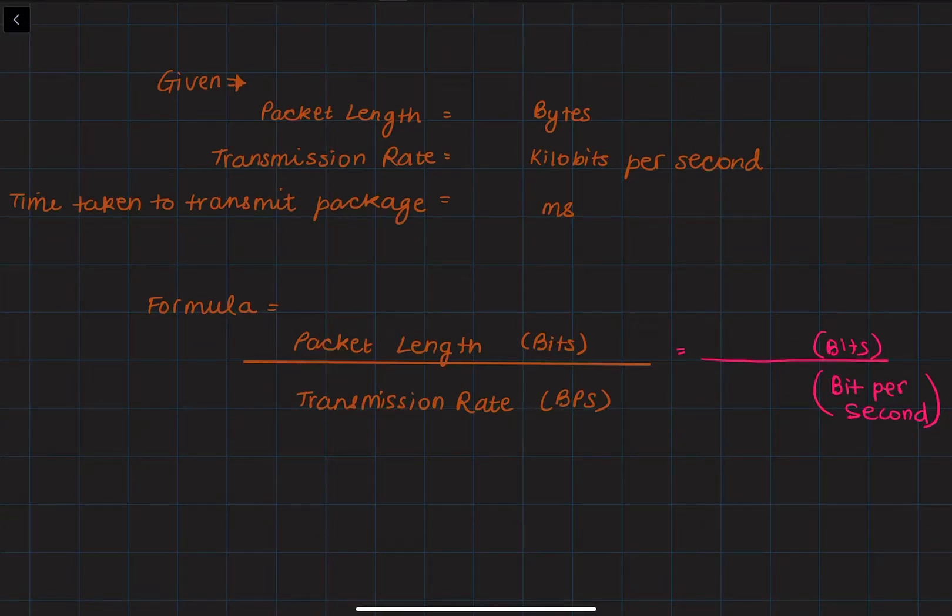If a packet is 4 bytes in size and the transmission rate is 78 kilobits per second, then how many milliseconds will it take to transmit the packet?